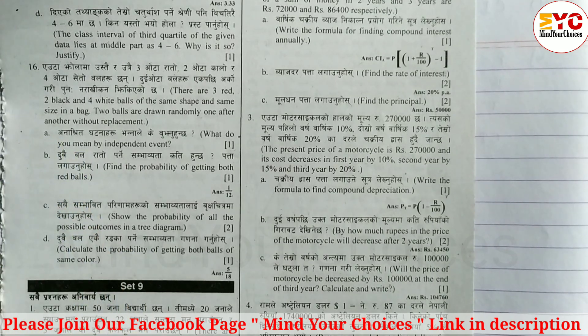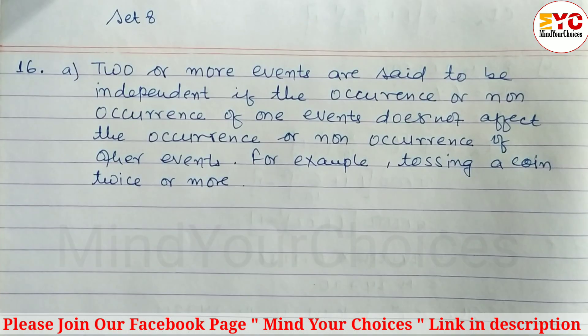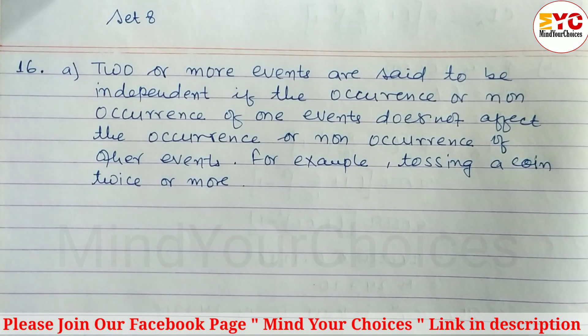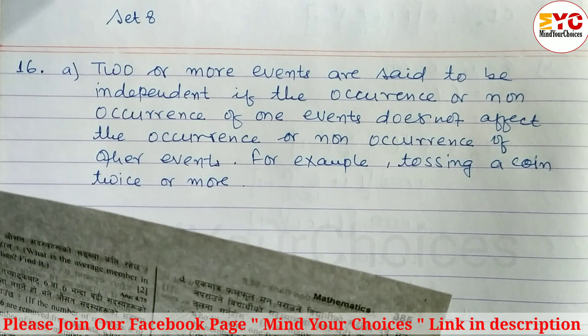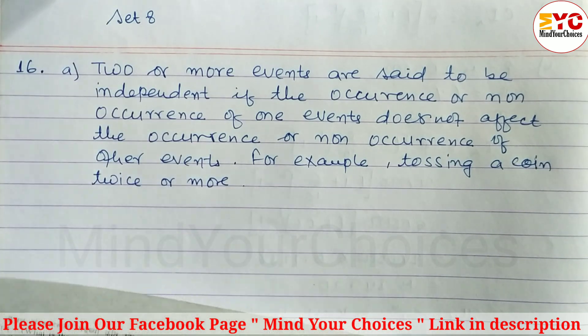Let's start from Question A. We have to write down the definition of independent events — the definition of independent events with an example.